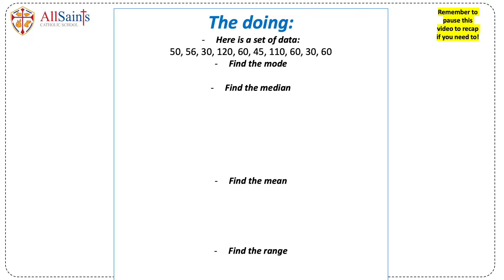Here we have a set of data and we want to work out the mode, median, mean and the range. To work out the mode you look for the most common number in our list, which in this case is 60, so the mode is 60.